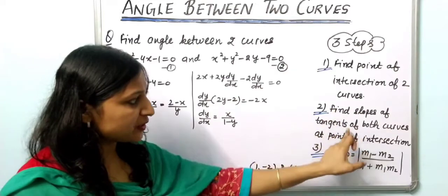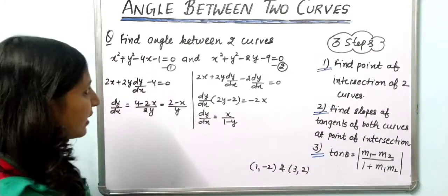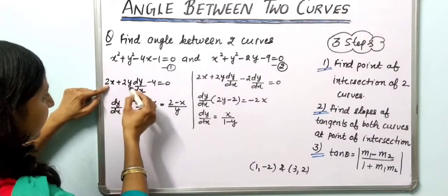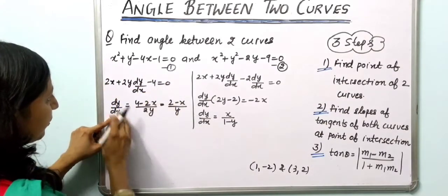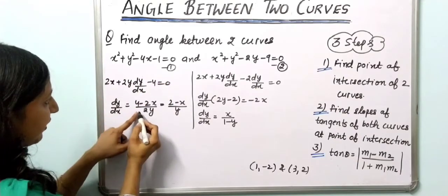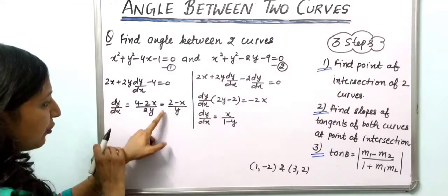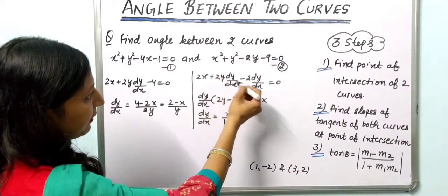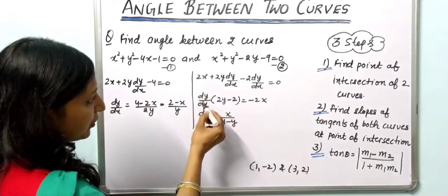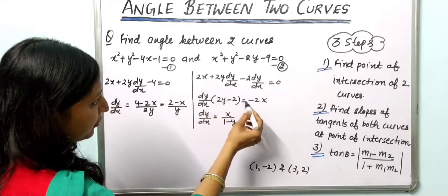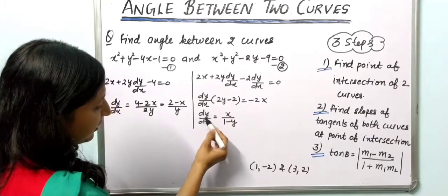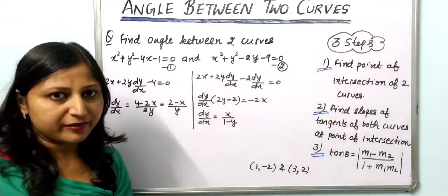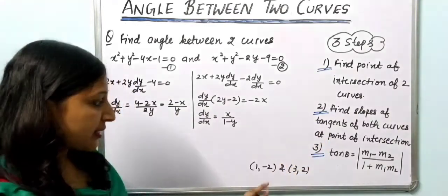For step two, we find the slopes of the tangents of both curves. Differentiating the first curve: 2x + 2y(dy/dx) − 4 = 0, which gives dy/dx = (2 − x)/y. Differentiating the second curve: 2x + 2y(dy/dx) − 2(dy/dx) = 0, so dy/dx(2y − 2) = −2x, giving dy/dx = x/(1 − y). Now we evaluate these slopes at each point of intersection.